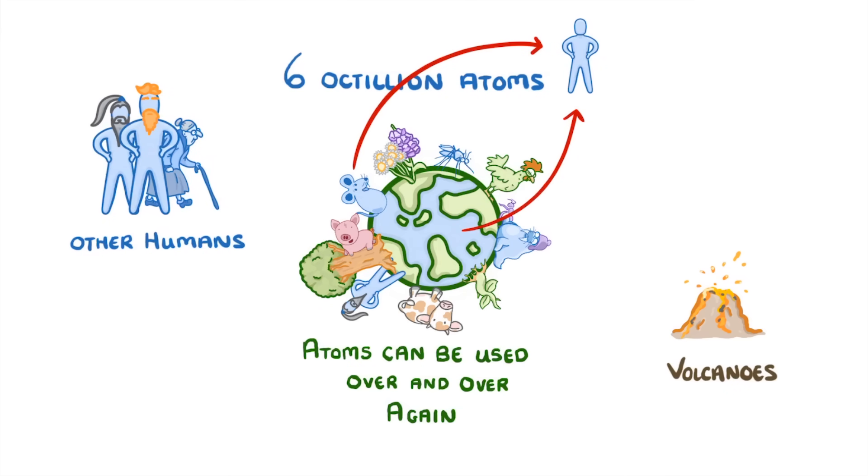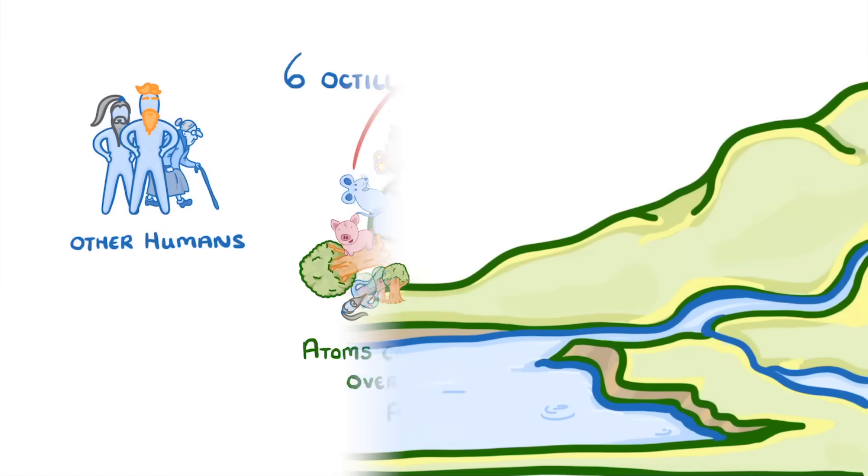All of these different molecules and elements have different cycles, but the two we're going to cover are the water cycle and the carbon cycle. For the water cycle, let's imagine a typical environment, which includes some land and water.